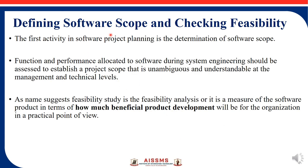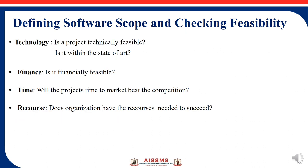How do we define software scope and check the feasibility? Feasibility is a study or analysis that measures a software product in terms of how much beneficial its development will be for an organization from a practical point of view. The checkpoints to check feasibility are: technology, finance, time, and resource.